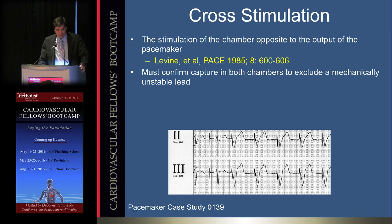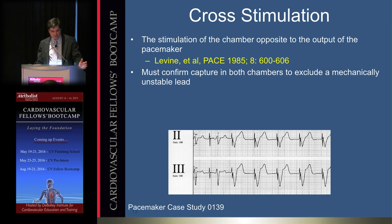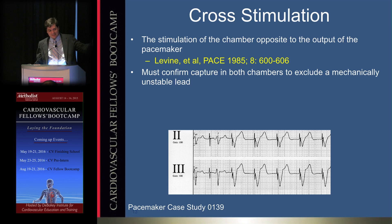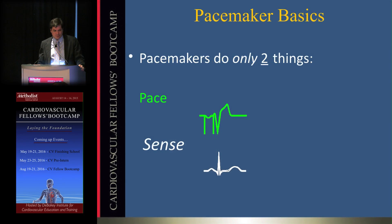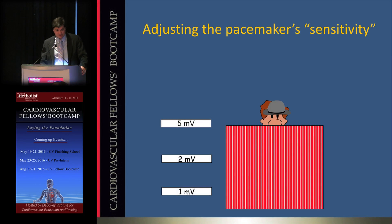Crosstalk occurs when an atrial lead's output is cranked up — increasing pulse width or voltage — to the point that energy crosses to the ventricle and captures it as well. Reducing output brings you back to atrial-only capture. Modern devices have largely eliminated older crosstalk issues, but this remains an important concept to keep in mind.